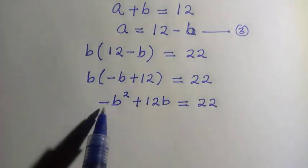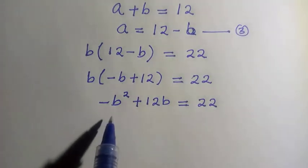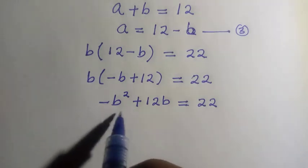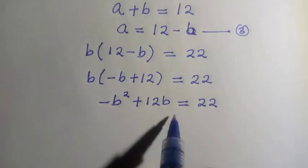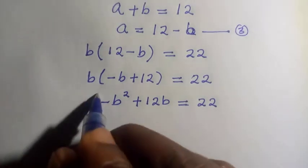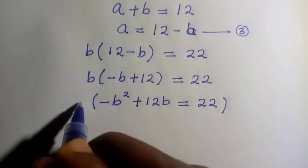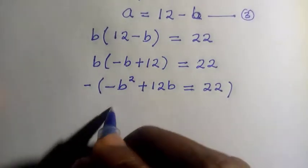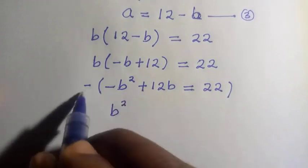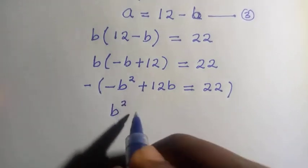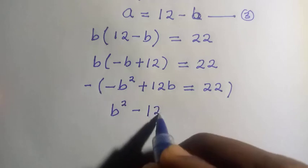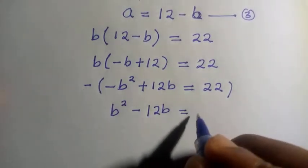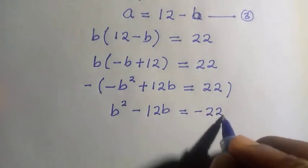Here we have a negative leading term, and we don't want to keep it negative. So what we are going to do is multiply both sides by negative one, so that we have B squared minus 12B equals minus 22.